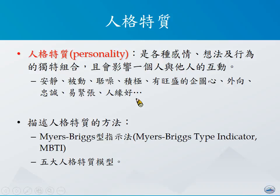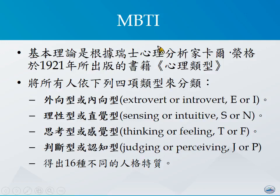在学理上描述人格特质时，最常使用的有以下两种方法。第一种方法是Myers and Briggs所发展出来的Myers and Briggs Type Indicator（MBTI）的方式；第二种则是所谓的五大人格特质模型。MBTI模型的基本理论是根据瑞士心理学家荣格在1921年出版的《心理类型》当中的一些概念进而延伸出来的。